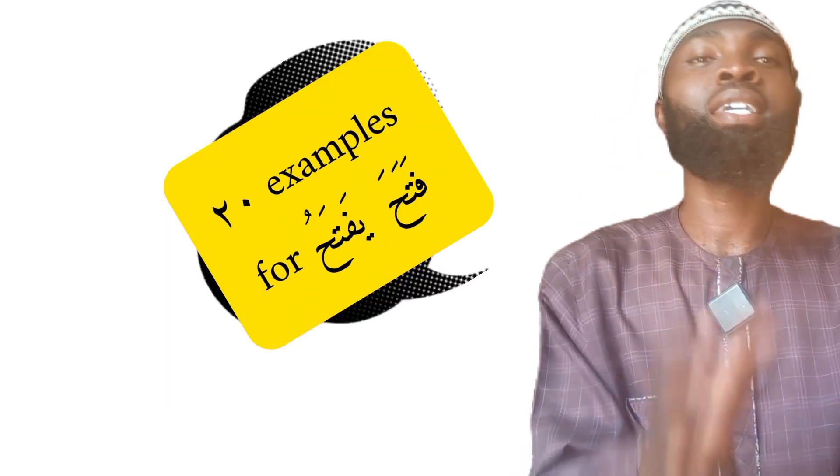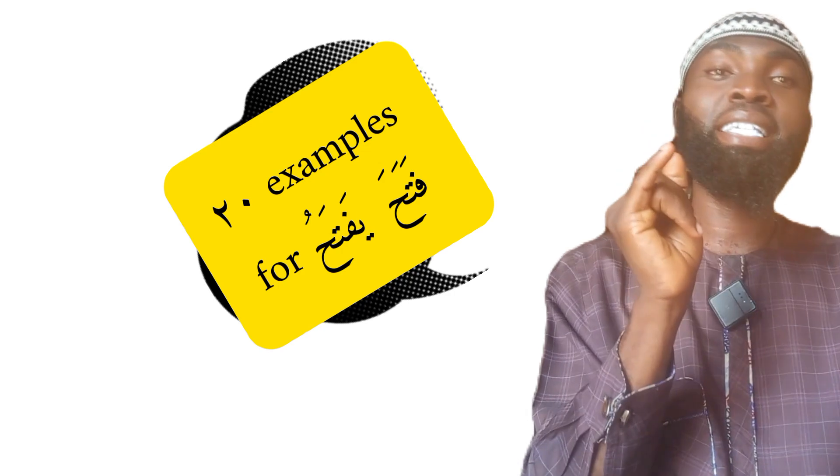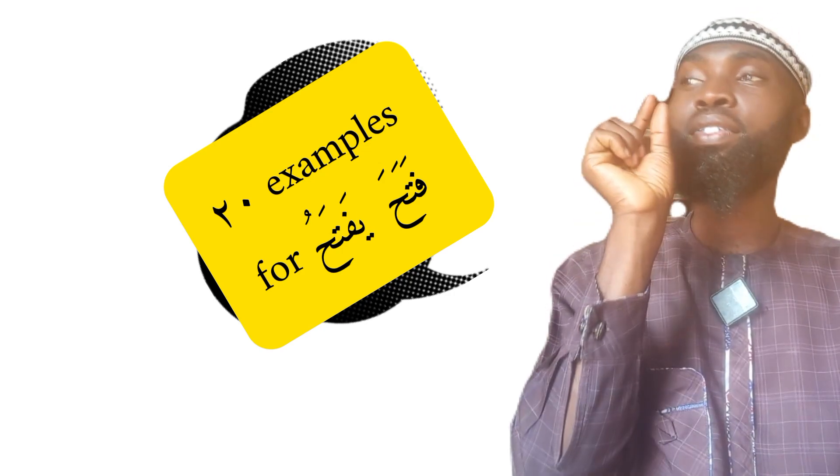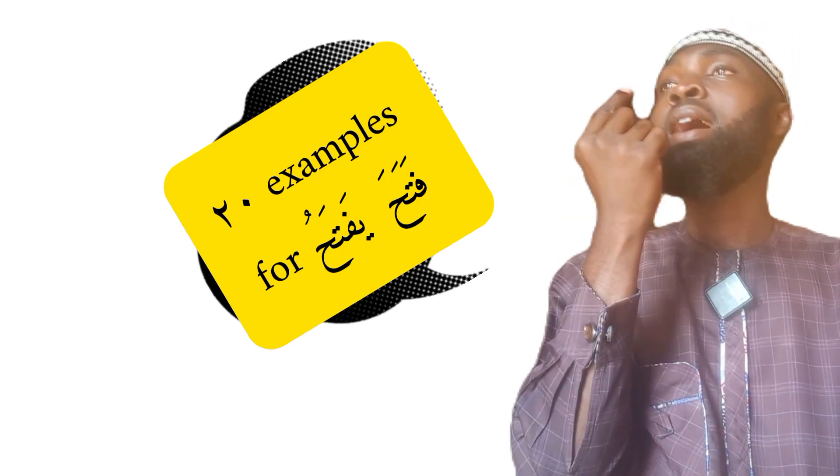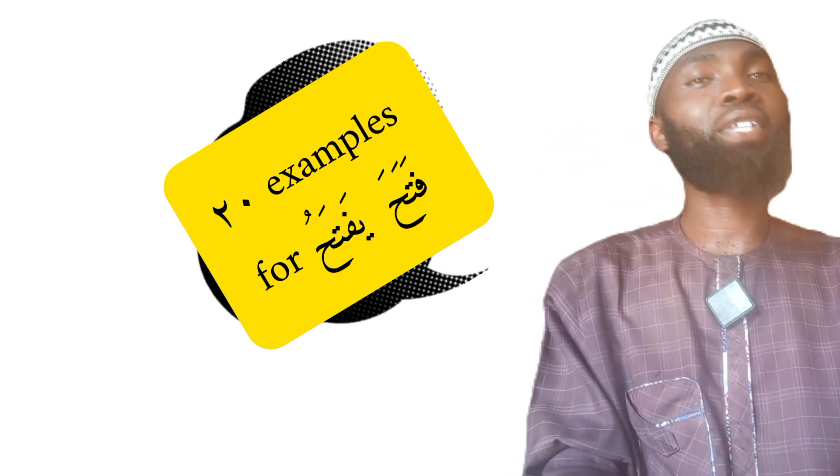The triliteral verbs have six patterns: nasara yansuru, dorra bayadribu, fatah hayaftahu, fari hayafrahu, hasibayahsibu, and kalumayakrumu. In the two previous episodes, we brought 20 examples each for the first pattern and the second pattern. So today, we want to also provide you with 20 examples for the third pattern, which is the fatah hayaftahu.